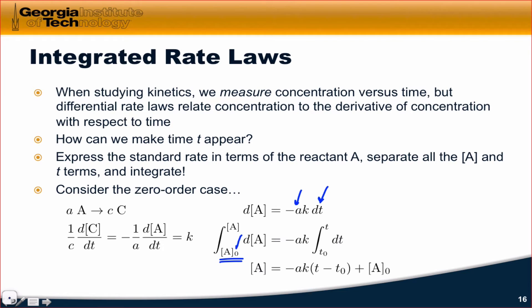That's what this zero subscript is meant to denote. Moving that to the other side and integrating over here, we get t minus t0 for this integral, and so we find that the concentration of A at any time point is equal to minus ak t minus t0. t0 is usually set to 0, so that minus ak t just appears there, plus the initial concentration, and this should make sense.